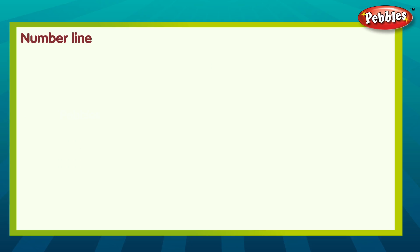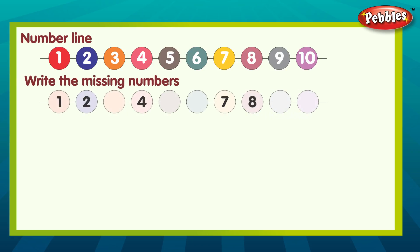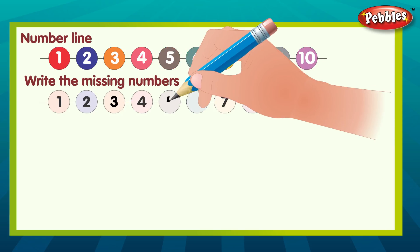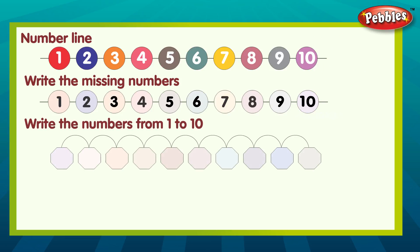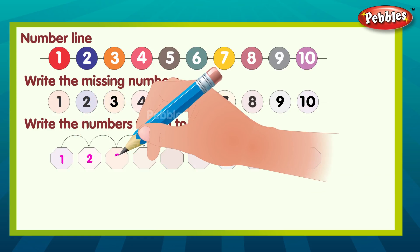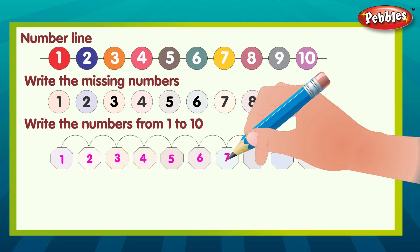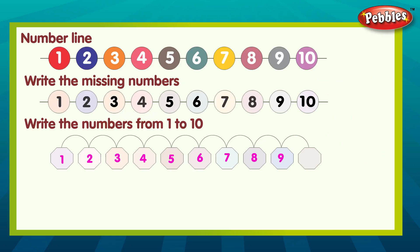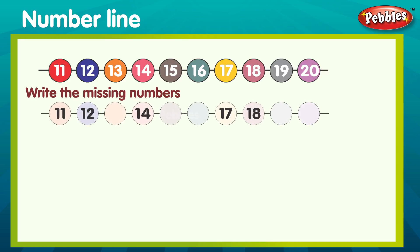Number line. Write the missing numbers. Write the numbers from 1 to 10. 1, 2, 3, 4, 5, 6, 7, 8, 9, 10.